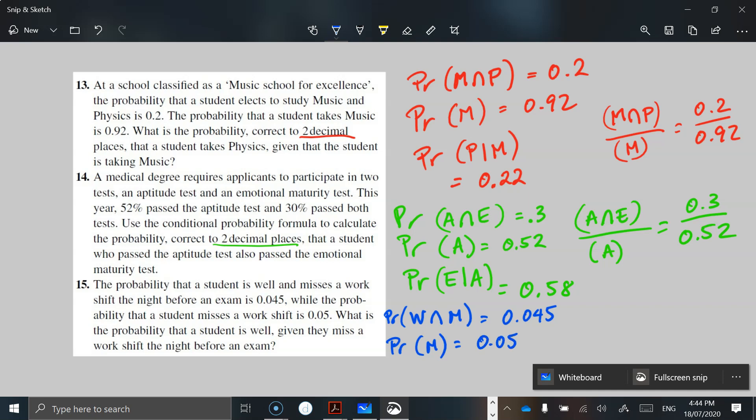What is the probability that a student is well, given they miss a work shift the night before the exam? So what is the probability of being well, given that they miss as well? So we've got the intersection. So W intersection M divided by just M is going to be 0.045 divided by 0.05. Put that in your calculator. It becomes 0.9 as the probability.